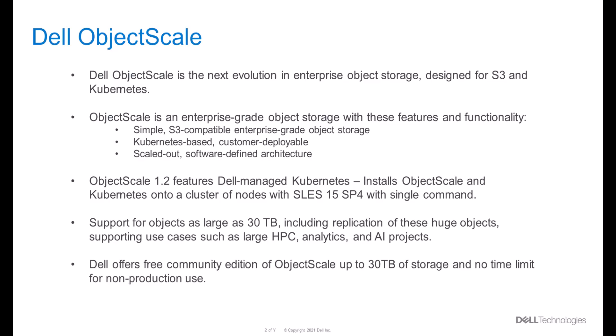Dell ObjectScale is an enterprise object storage designed to run on Kubernetes. Dell has released the new version of ObjectScale 1.2, which features a Dell managed Kubernetes. Now we have two different ways of deploying ObjectScale: deploying it as an application onto an existing Kubernetes cluster like an OpenShift cluster, or deploying ObjectScale with the Dell managed Kubernetes.